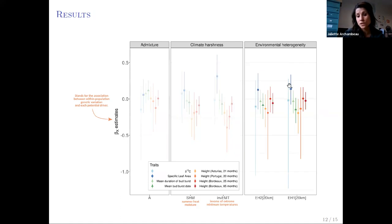We did not find any association between our indexes related to environmental heterogeneity and the quantitative genetic variation within each population. This is shown here for the environmental heterogeneity within a 20 kilometer radius area, but it was the same for the smaller areas.